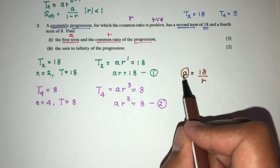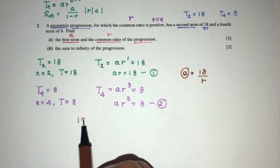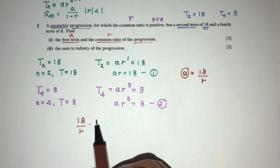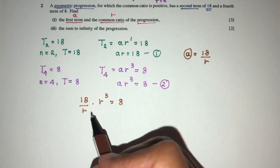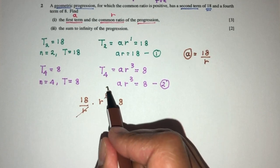Now, we can replace the a here. So, a is also equal to 18 over r, r times r cubed equal to the value of 8. Simplify. This will cancel out with this.